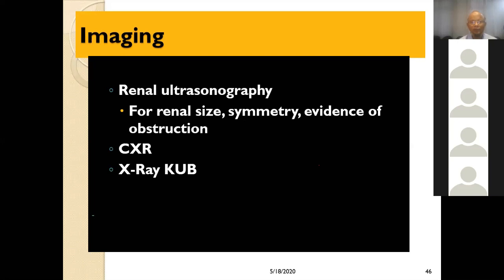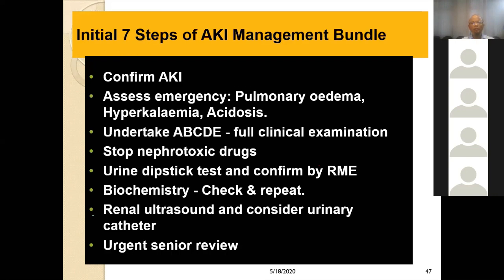For imaging: renal ultrasonography to assess renal size, symmetry, and evidence of obstruction. Chest X-ray is also important — if there is sepsis, it may show a source of infection. X-ray KUB can also be done. In selective cases, CT scan may be performed.